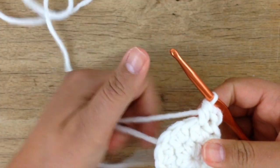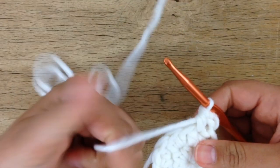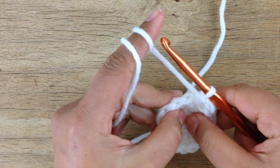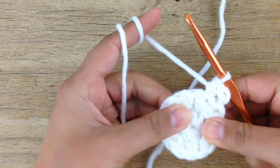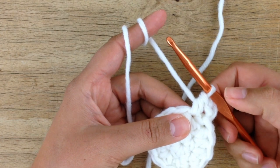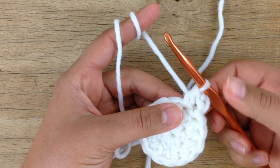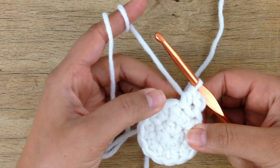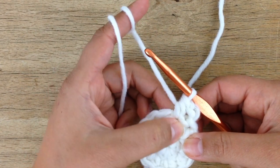Now what we will need to do in order to not end up with a bowl but with a circle is we will need to increase. You are increasing if you work several stitches into one stitch of the previous row.